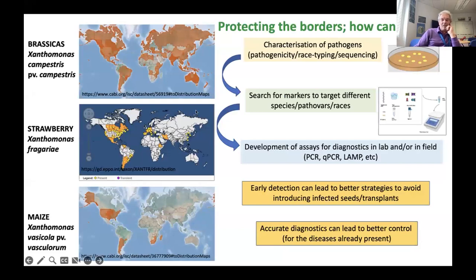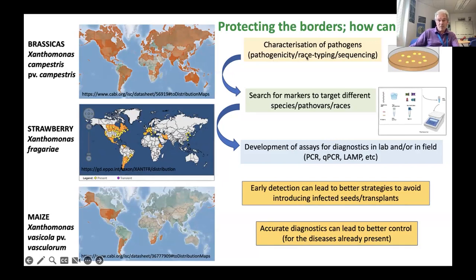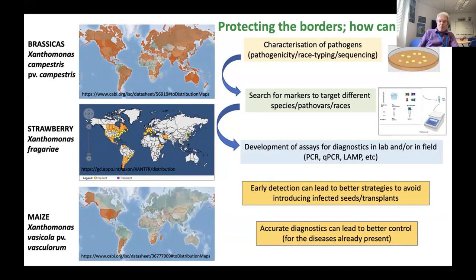How do we protect our borders? The examples I've given today are the brassicae from campestris campestris, and we can use genomics for pathogenicity and race-typing work at Warwick. For strawberry, we can search for pathogen species and cultivar races. We can develop PCR, quantitative PCR, or LAMP-based assays, and the same for maize. What we're looking at is early detection, so we can develop strategies to avoid the introduction of these key pathogen threats to the UK.